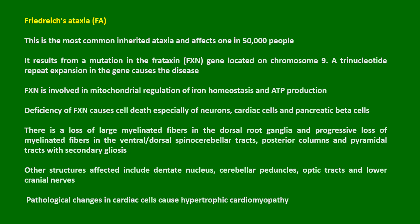Friedrich's Ataxia is the most common inherited ataxia and affects 1 in 50,000 people. It results from a mutation in the frataxin gene located on chromosome 9. A trinucleotide repeat expansion in the gene causes the disease. Frataxin is involved in mitochondrial regulation of iron homeostasis and ATP production. Deficiency of frataxin causes cell death, especially of neurons, cardiac cells, and pancreatic beta cells.